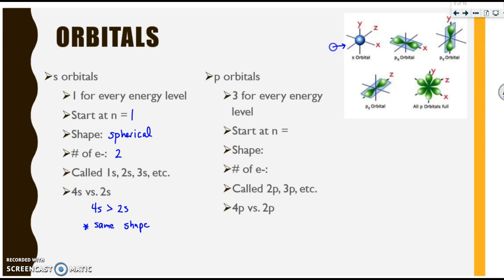P orbitals, there are three for every energy level. You can see them labeled here PX, PY, and PZ. And here's all of them together. They start at energy level two. They are said to be shaped like a dumbbell. And they can hold a maximum of two electrons each. So 2 times 3 equals 6. So you can have a max of 6 electrons within your P sublevel. And again, they're called 2P, 3P, so on and so forth. And once again, a 4P versus a 2P, 4P is going to be larger than 2P. But just like the S's, they are going to be the same general shape.